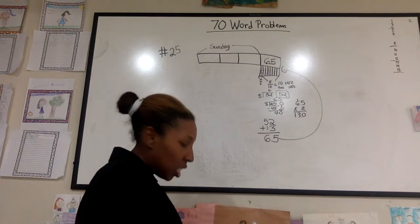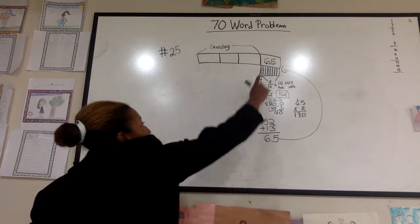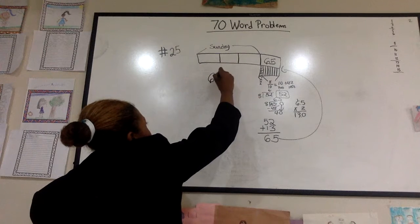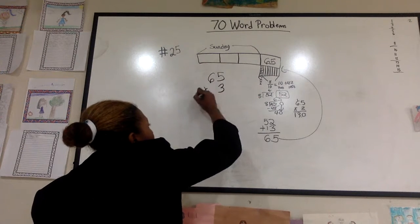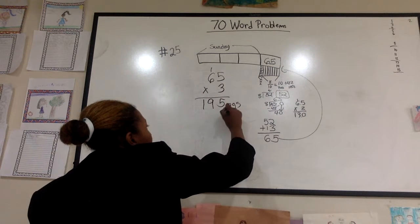Now we know if 65 is this box, they want to know how many did he read on Sunday. Well, we know these are equally split, and you have one, two, three of the boxes on Sunday. 65 times three is 195 pages Sunday.